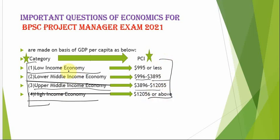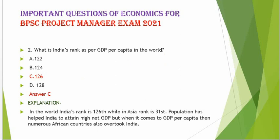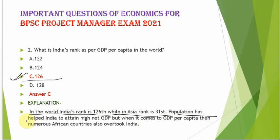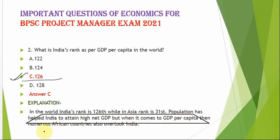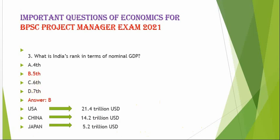The next question is: what is India's rank as per GDP per capita in the world? The correct option is option C — India's rank is 126th. In the world, India's rank is 126th, while in Asia the rank is 31st. India's large population has helped it attain a high net GDP, but when it comes to GDP per capita, numerous African countries also rank above India.